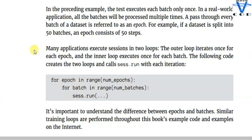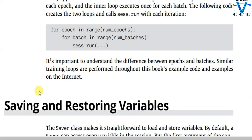In the preceding example the session executes each batch only once. In real-world applications all batches are processed multiple times. A pass through every batch of the dataset is referred to as an epoch. For example, if a dataset is split into 15 batches, an epoch consists of 15 steps. Many applications execute sessions with two loops: the outer loop iterates once for each epoch, and the inner loop executes once for each batch, calling ses.run on each iteration. I'll talk about epochs in more detail in the next video.